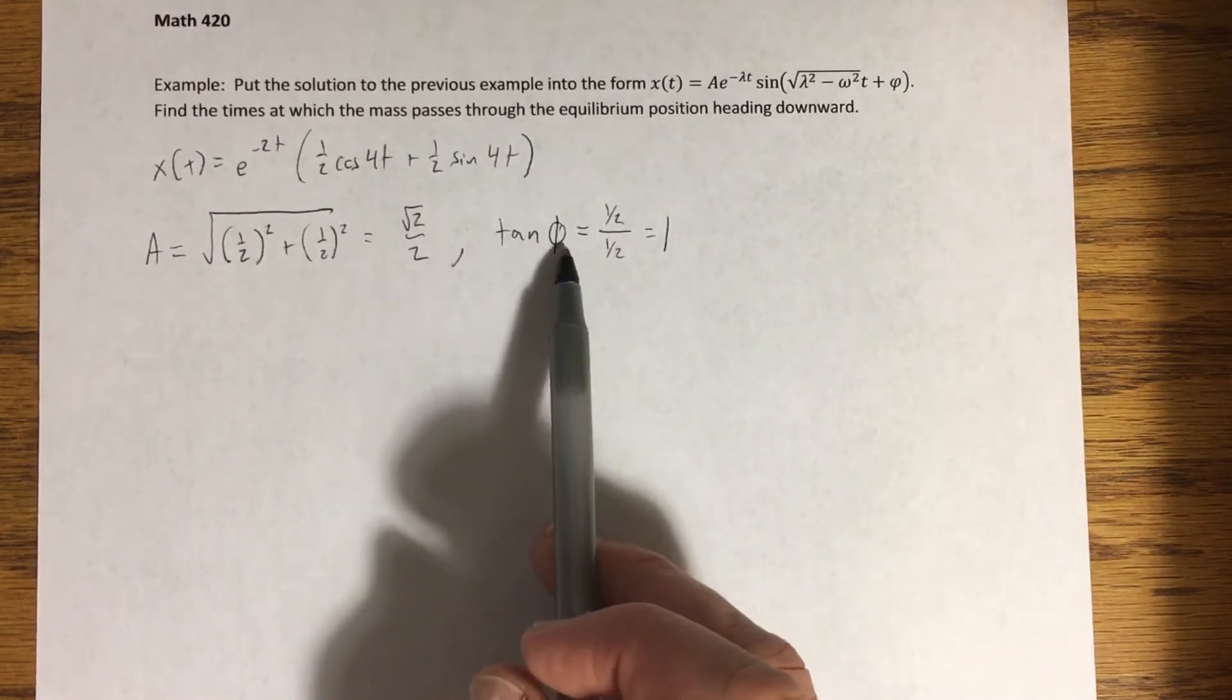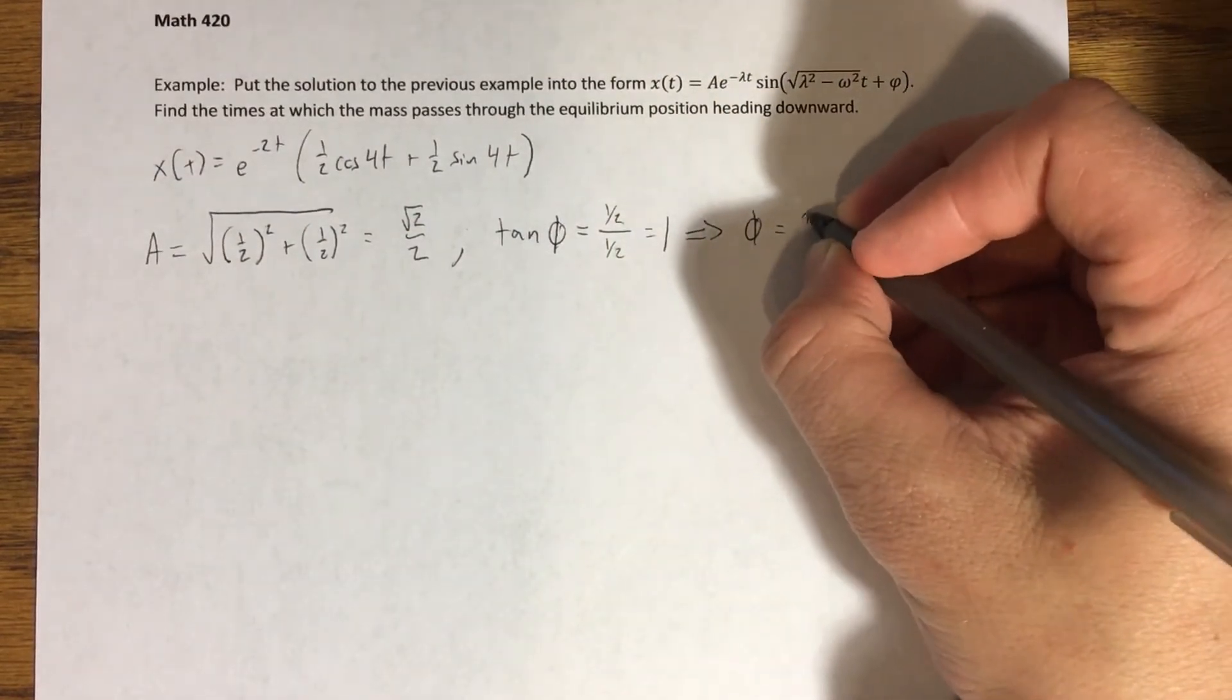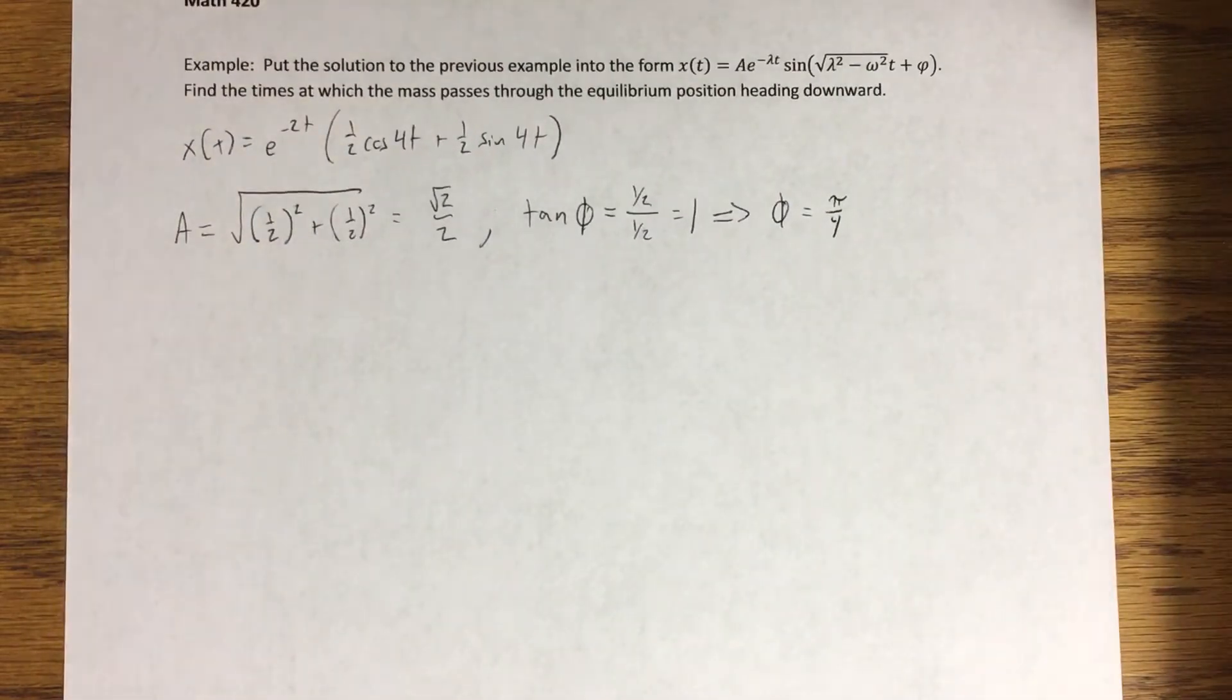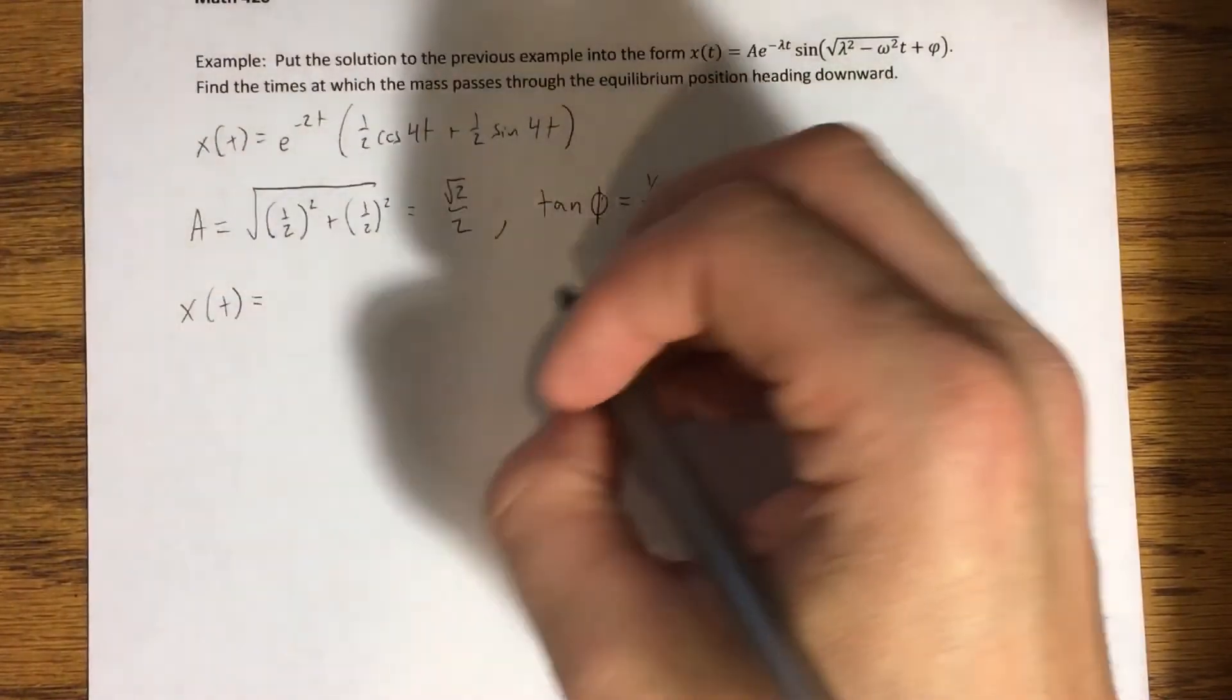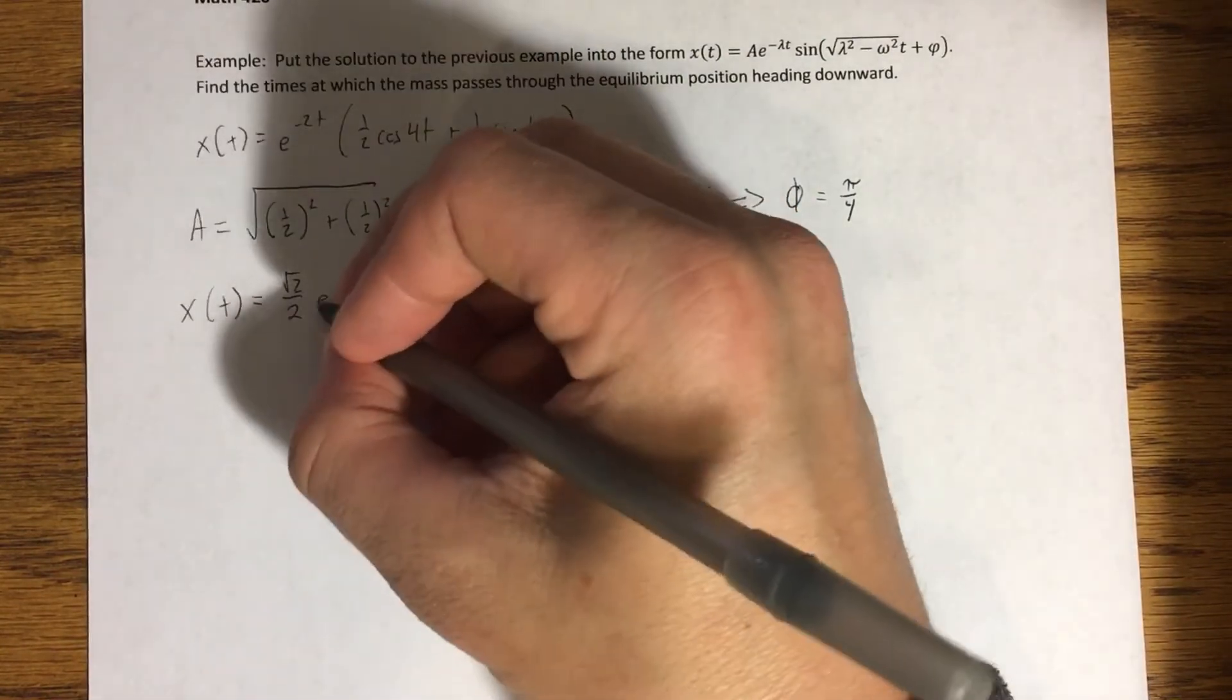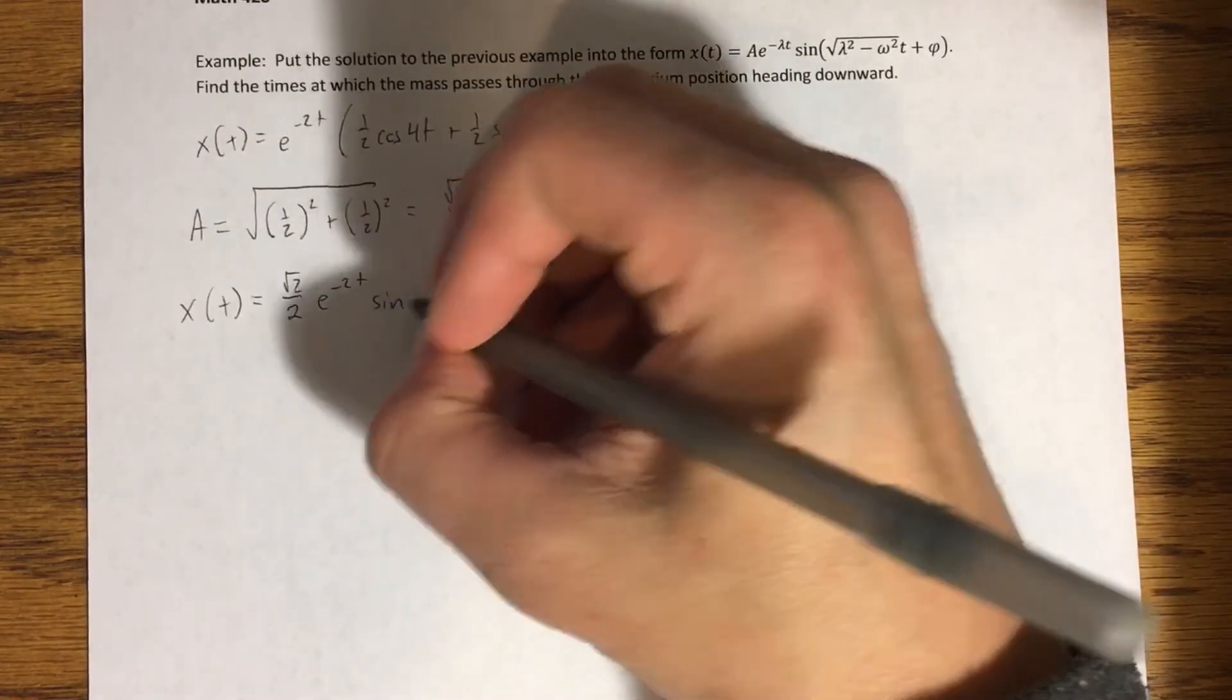Now, both our parameters are positive, meaning sine and cosine are both positive. Sine of phi and cosine of phi are both positive. That happens in the first quadrant. And in the first quadrant, the angle at which tangent is equal to one is pi over four. In this case, the inverse tangent function would have given you the correct answer. Okay. So that right away tells me how I can write my function in that form. x(t) is equal to A, which is root two over two times e to the negative 2t times sine of.